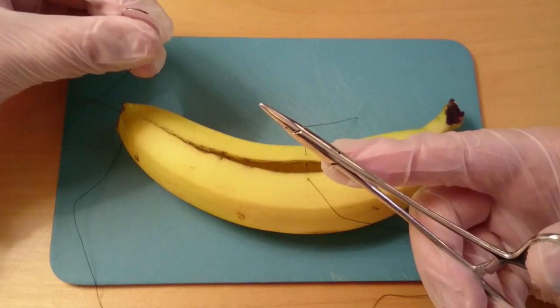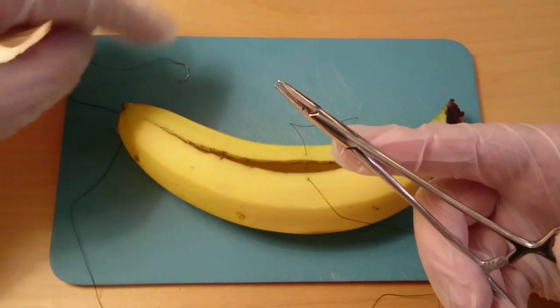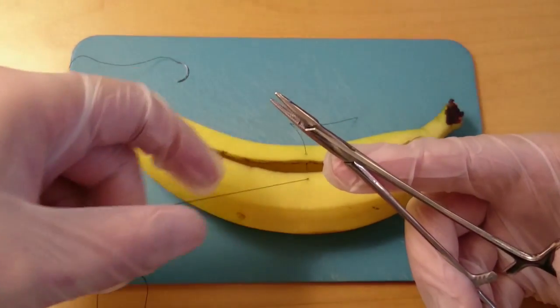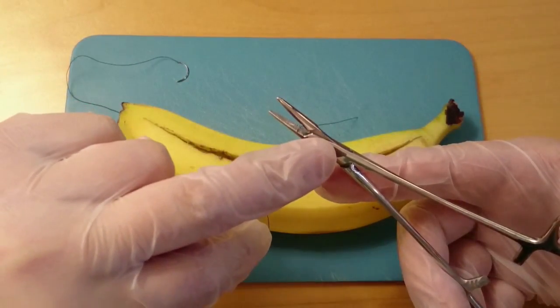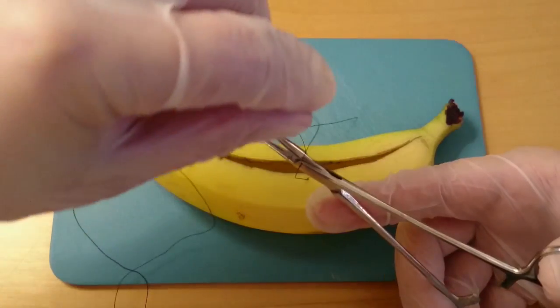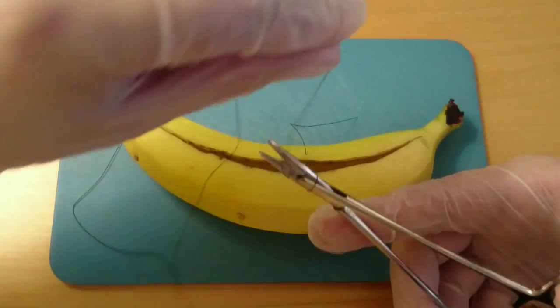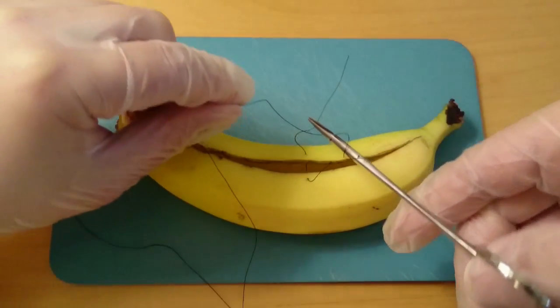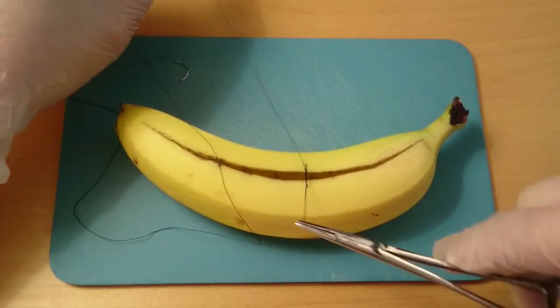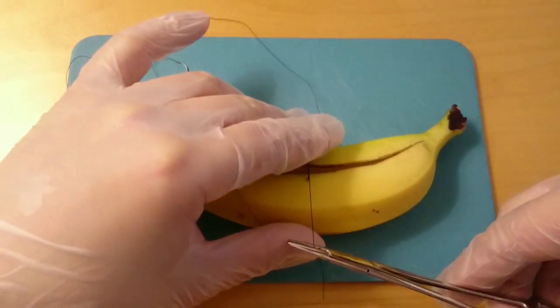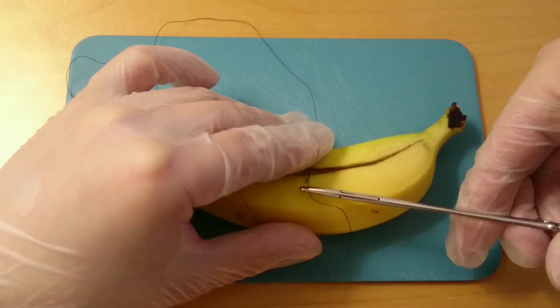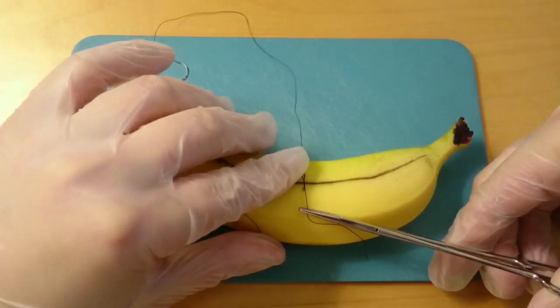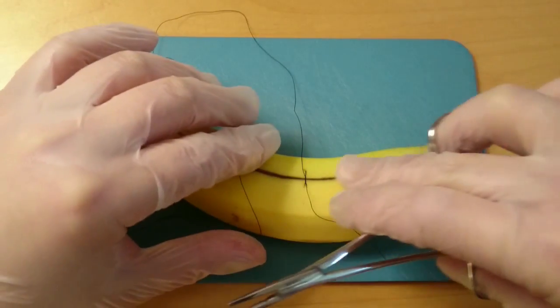Now we're going to do our first knot. You always start with the suture needle on, and then the driver uses the side facing you. Start one way, and you do two loops - just one, two. You take over and pick up the thread and pull it through.